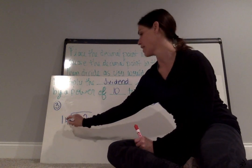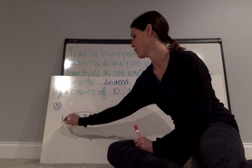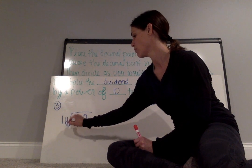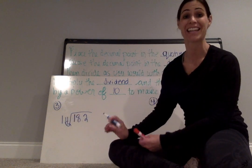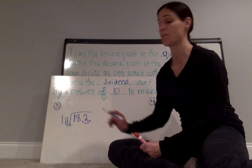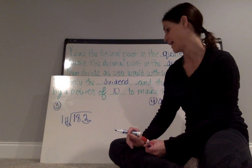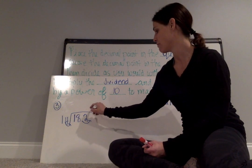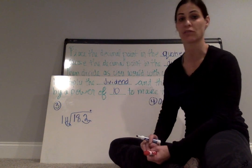So in the divisor, I notice I need to move the decimal point once to the right, which means I am multiplying it by 10. So I also need to move it once to the right in the dividend, which means I am also multiplying that number by 10. And then I will go ahead and move it up, just in case we still need that decimal.